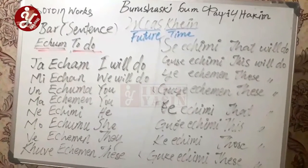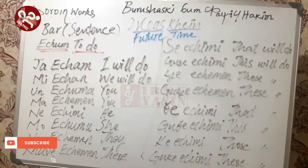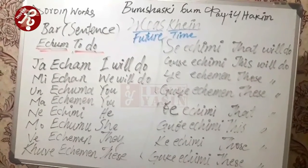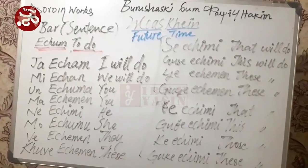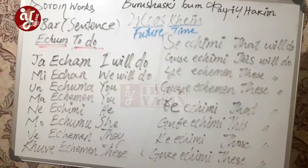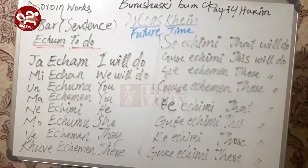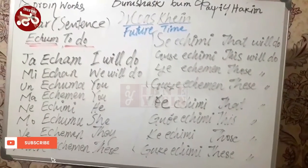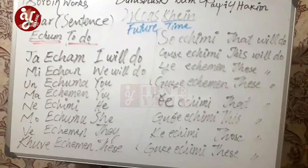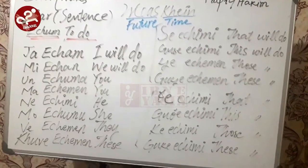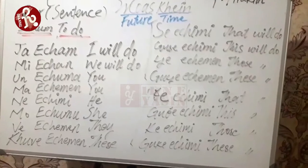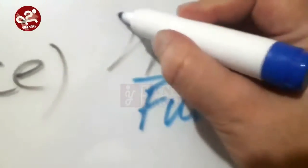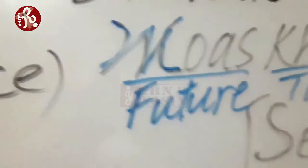We are studying 'doroing,' which means 'work.' We are studying about 'bar,' which means 'sentence' — so 'bar' is sentence, and 'burring sentences.' The future tense is called 'roaskhen.' We have taken one example: 'echom,' which means 'to do' — one example of a verb on which we will now make the future tenses.